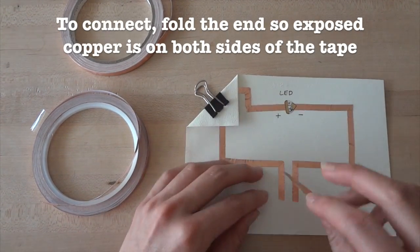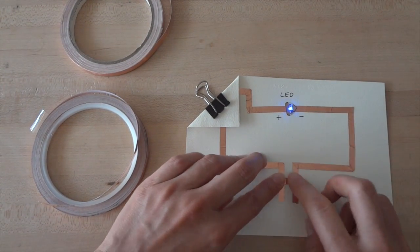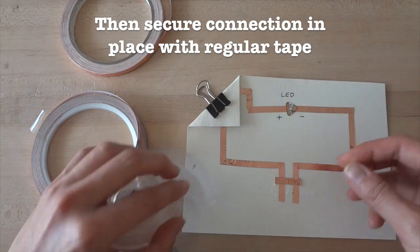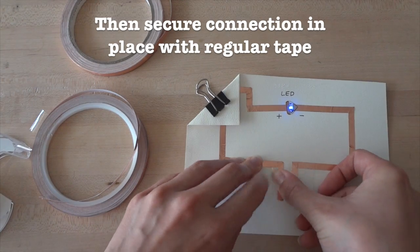Here, you'll need to fold the tape on itself so that the exposed copper is on both sides. Then, you can tape it back down to your circuit. But since the ends aren't sticky anymore, you'll need to tape over the connection with a normal piece of tape to secure everything.